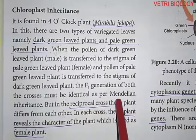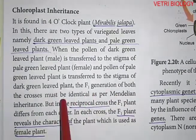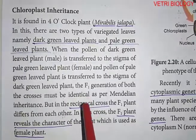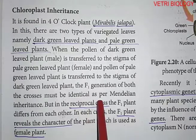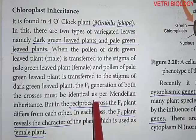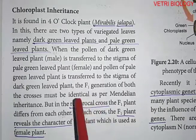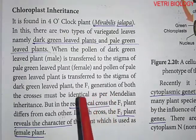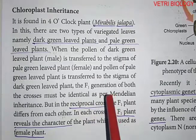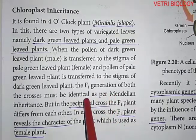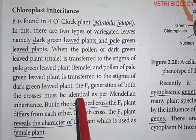As per Mendelian inheritance, the F1 generation of both crosses must be identical. Mendel stated that in a reciprocal cross, whether the parent is male or female, only the dominant character will be expressed in the F1 generation. This applies to chromosomal genes because they follow Mendelian inheritance.